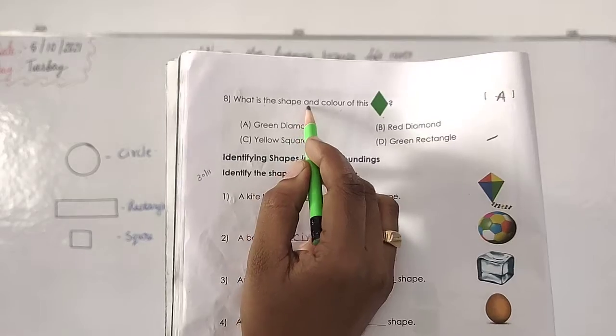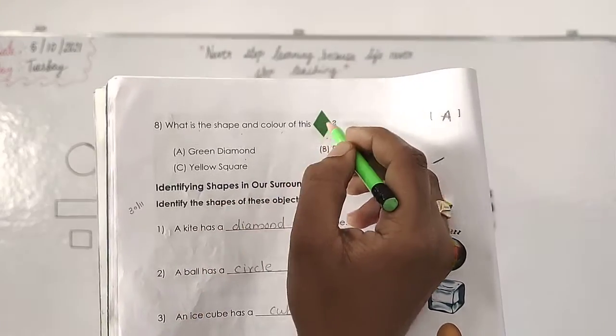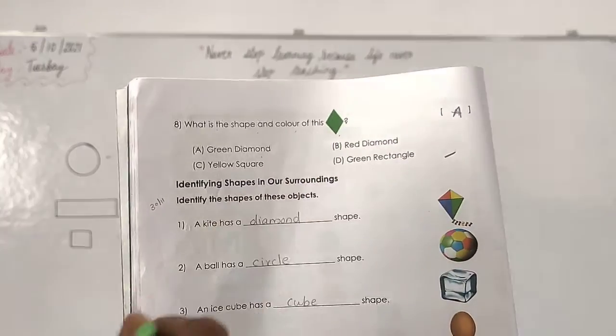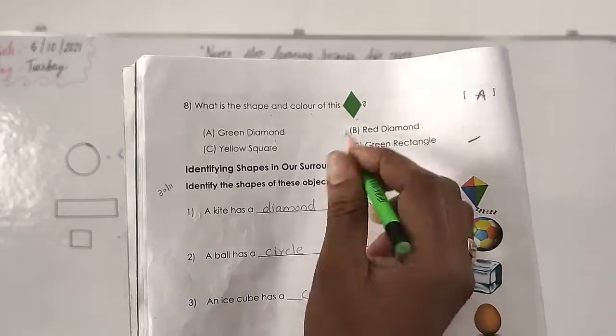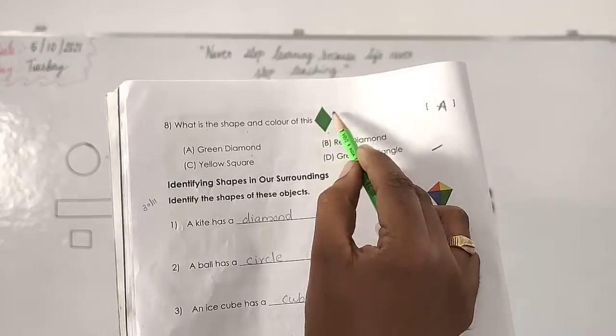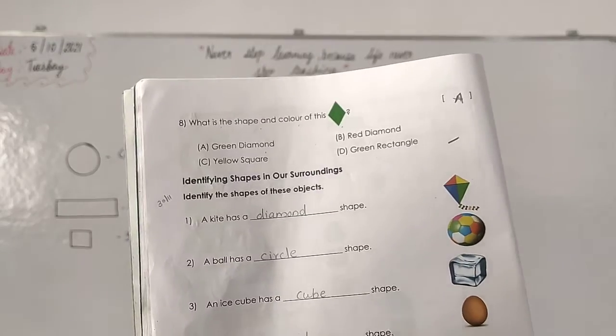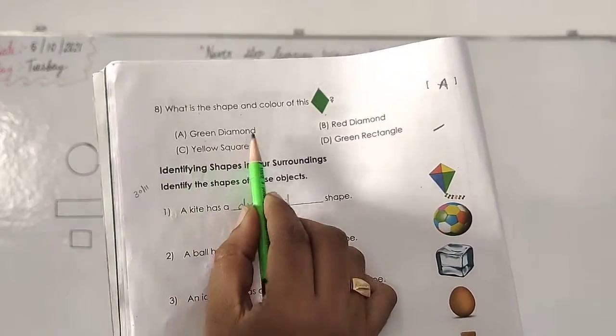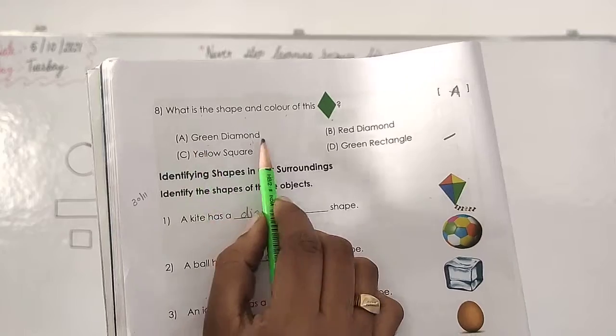What is the shape and color of this? This one. Which shape? Then color also you want to tell. Tell me which color this one? Green color. Yes. Then which shape? What shape this one? Diamond. Then we will see. Green diamond. Yes. Correct. Green diamond A.